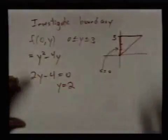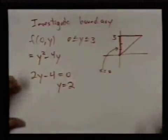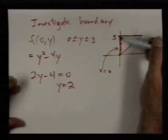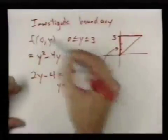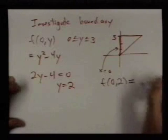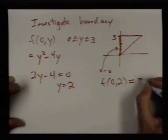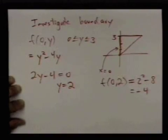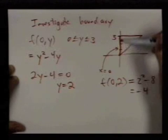We could investigate whether it's a local max or min, but we can also just plug it into the function because any absolute max or min that occurs along here, except for the endpoints, would have to occur at the point (0,2). Plugging that into the function, I get 2²-8, so I get -4. It's also good to plug in the endpoints.